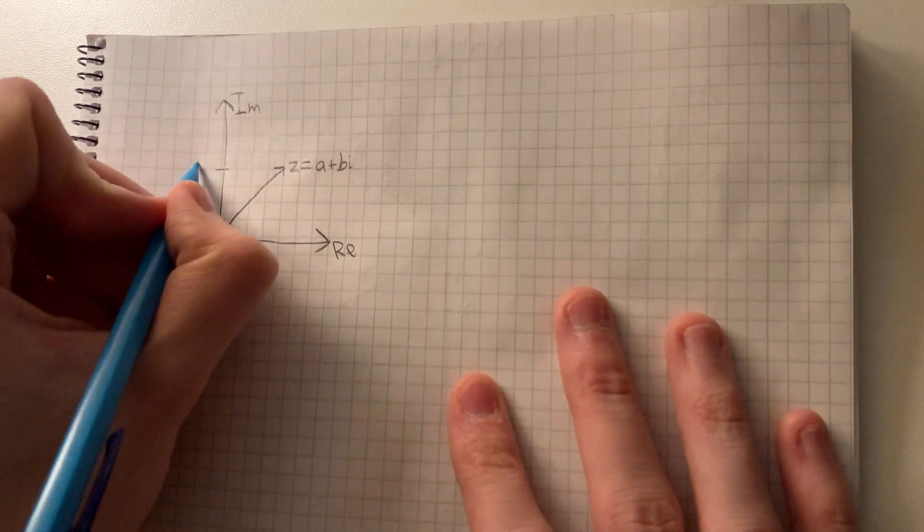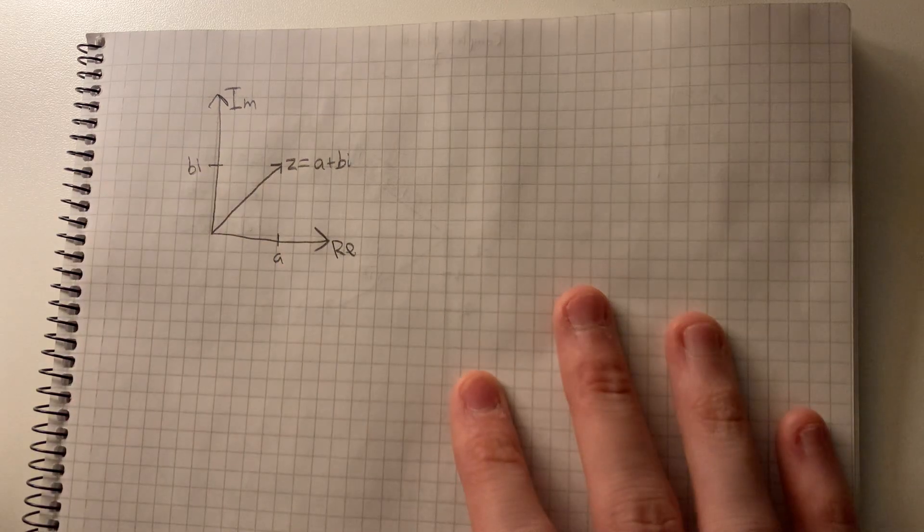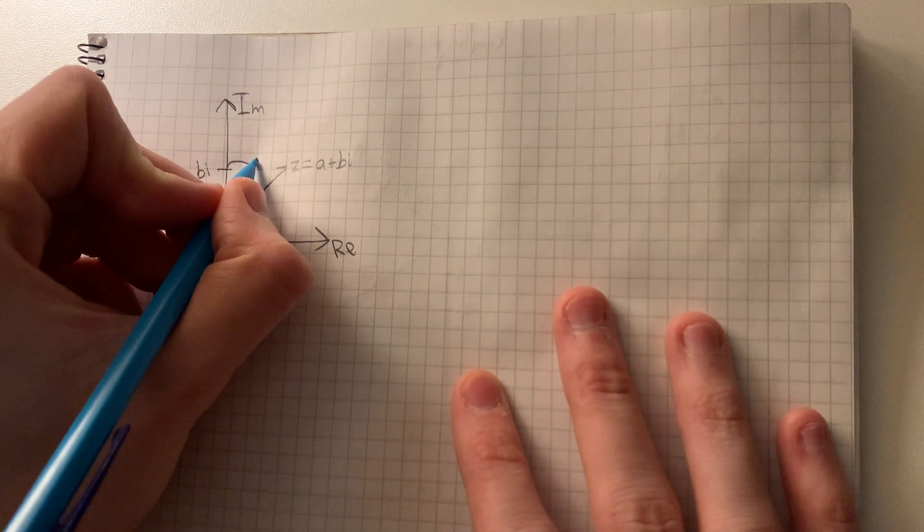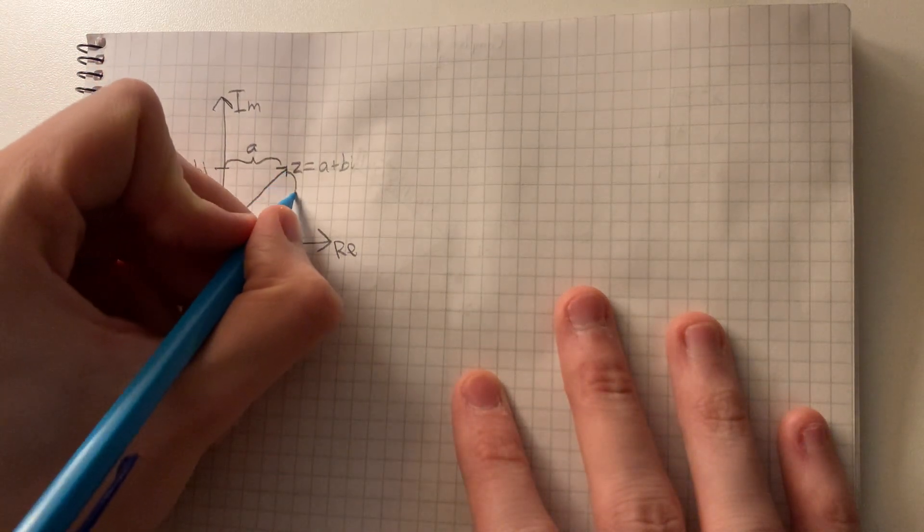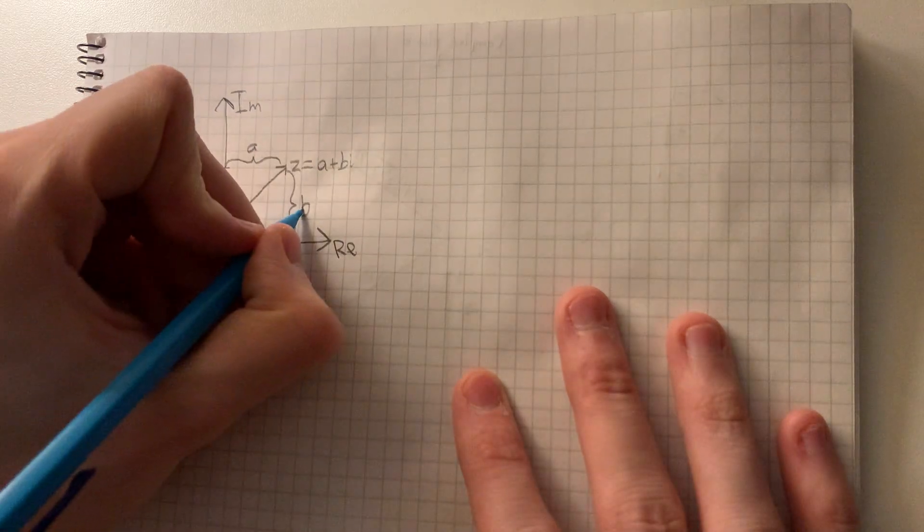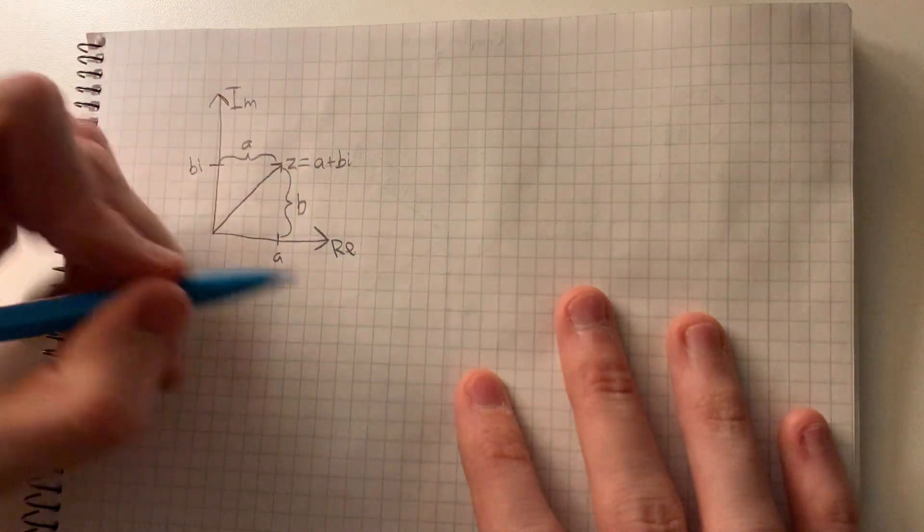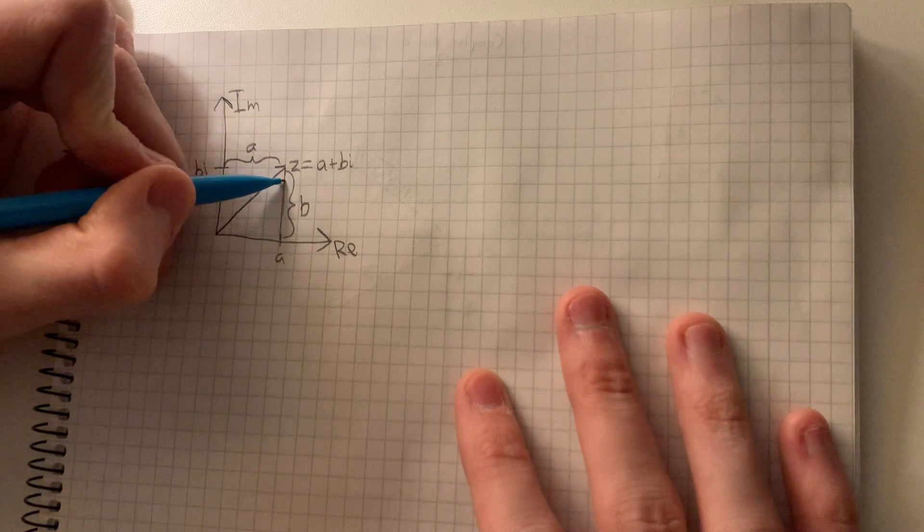Where this is bi and this is a. We can then see here that this is a long and this is b long. We can see that it sort of creates a rectangle here.